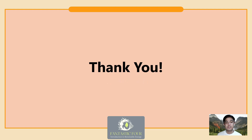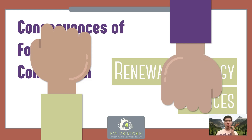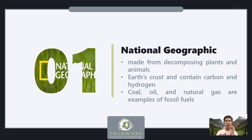That concludes Joseph's presentation. Mr. James Dingling will now discuss more about renewable energy sources. For the next part, we will discuss the consequences of fossil fuel combustion and renewable energy resources. According to National Geographic, fossil fuels are made from decomposing plants and animals found in the earth's crust, containing carbon and hydrogen which can be burned for energy. Coal, oil, and natural gas are examples of fossil fuels.